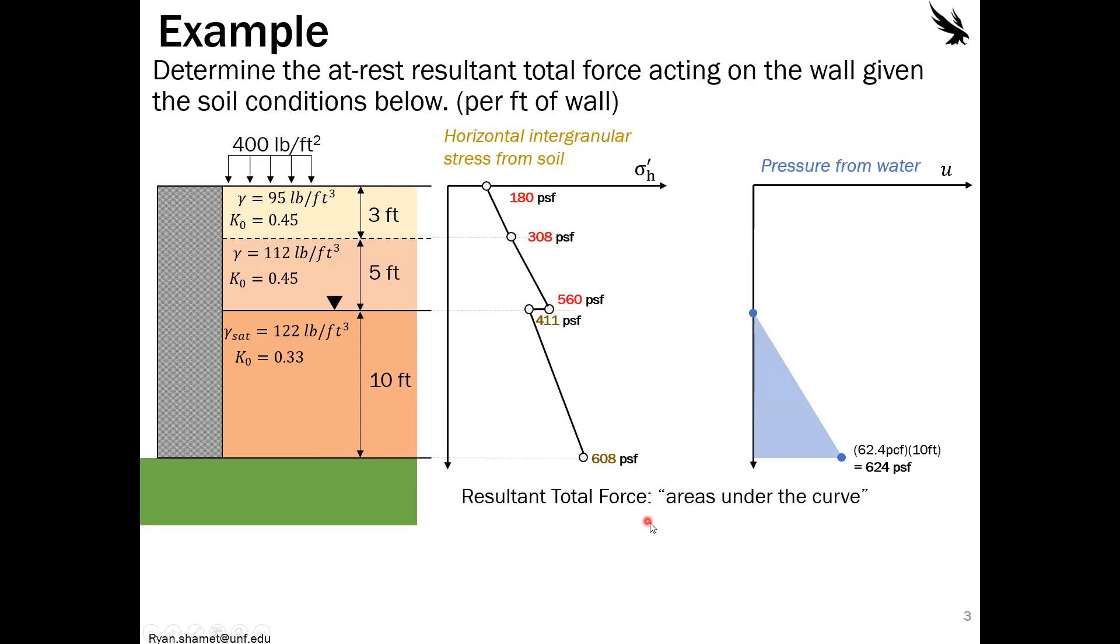So what we need to find is the resultant total force. So this is the total area under both of these curves, since we have the soil grains pressing on the wall as well as the water pressing on the wall. So in order to do that, we need to start taking areas. You can either do trapezoids if you're good at finding the area of trapezoids, or you can just subdivide them into squares and triangles. So I'm going to do that last technique here. So we see that we have these three squares and three triangles acting on the wall as well. And of course, we can't forget our water pressure as well.